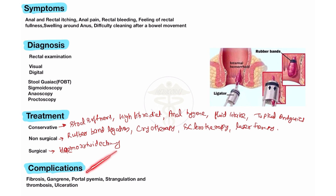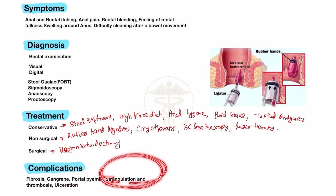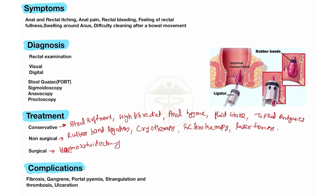The complications of hemorrhoid include: fibrosis, gangrene — due to severe tissue destruction — portal pyemia, strangulation, thrombosis, and ulceration. These are the complications of hemorrhoid. This is all about piles. Thank you so much.